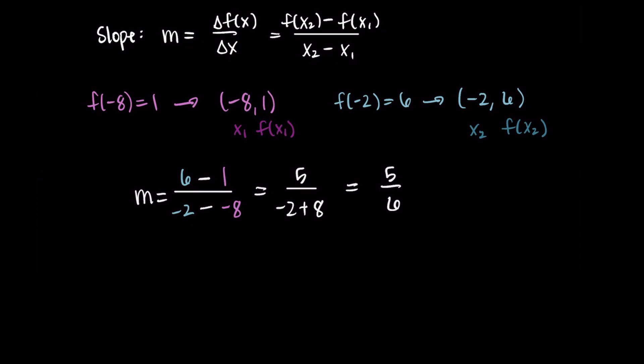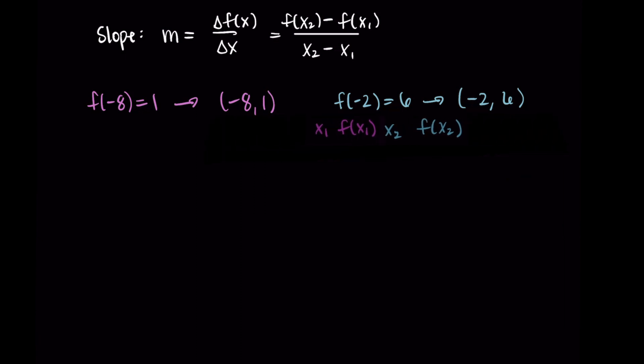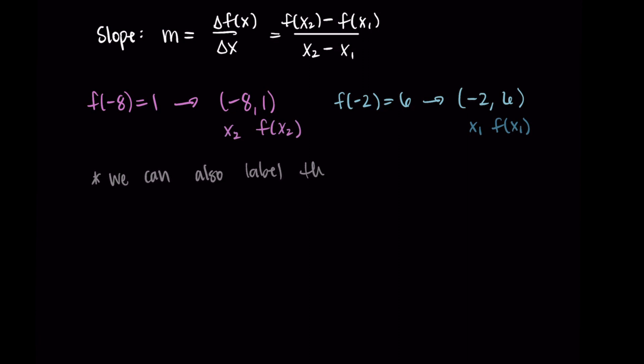So I just want to comment that I sort of arbitrarily chose which point was which here. So I sort of arbitrarily chose which point was the first point and which point was the second point. So I just want to swap them really quick and show you that everything works out just fine. So we can label these the other way. I'm going to let (-8, 1) be our x₂, f(x₂). And I'll let (-2, 6) be our first point, so the x₁, f(x₁).